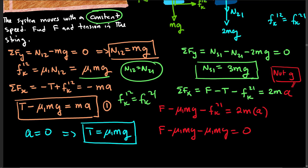In other words, F will be equal to 2μ1 mg. So this is the value of F required to cause the system to move with a constant speed. This is actually one of my most recent examination questions.